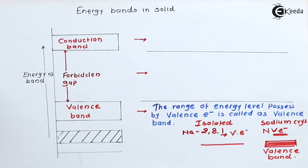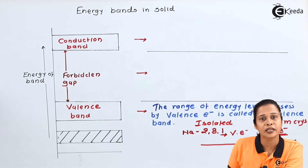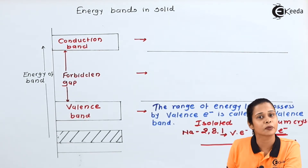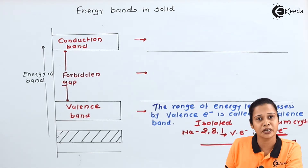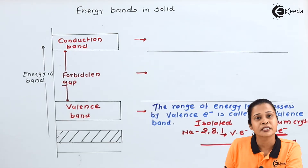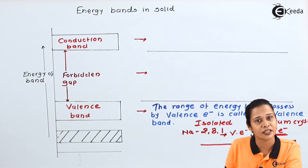Now let us see the properties of the valence band. In case of an insulator, all electrons are tightly bound with the nucleus, meaning all electrons belong to the parent nucleus. Hence the valence band is fully filled. In case of a semiconductor at low temperature, the valence band is fully filled, but at high temperature the valence band is partially filled. So the valence band is either fully filled or partially filled.